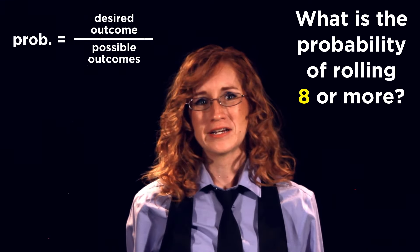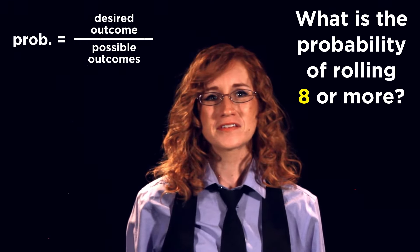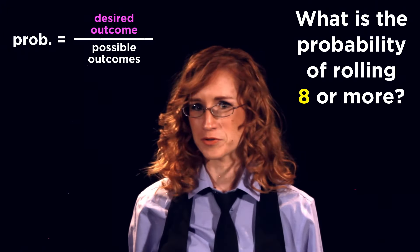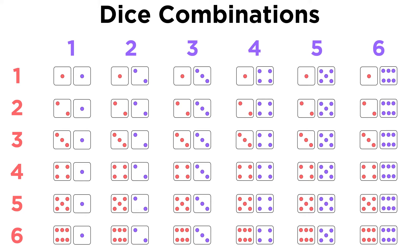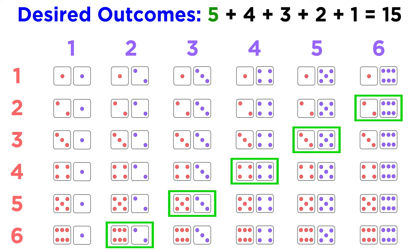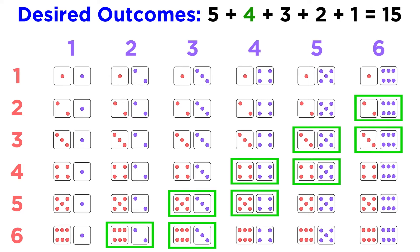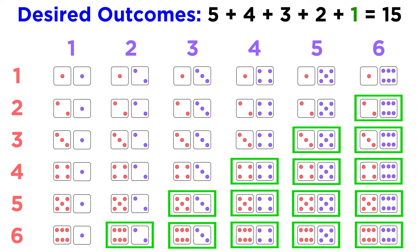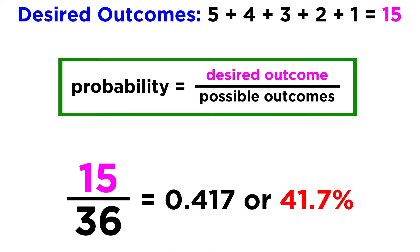What about the probability of getting a sum of eight or more? This is more complicated because there are multiple combinations that will produce this outcome. We can generate a grid of all the possible dice combinations with values increasing to the right and down, and then highlight all combinations that satisfy this desired outcome: five combinations that equal eight, four that equal nine, three that equal ten, two for eleven, and one for twelve. Five plus four plus three plus two plus one equals fifteen out of the thirty-six total possibilities, or about a forty-one point seven percent chance.